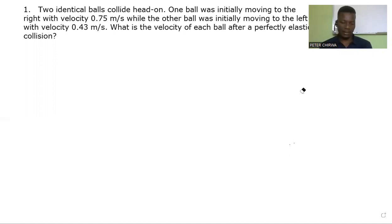The question says two identical balls collide head-on. One ball was initially moving to the right with velocity 0.75 meter per second, while the other ball was initially moving to the left with the velocity of 0.43 meter per second. What is the velocity of each ball after a perfectly elastic collision?